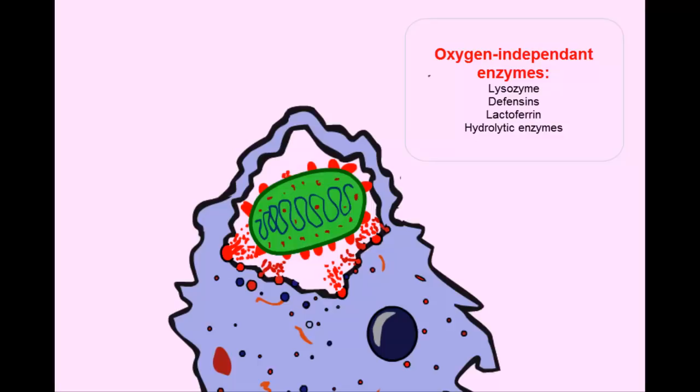Then you also have your defensins which form pores through bacterial cell membranes. And then stuff like lactoferrin which chelates the iron in the bacteria and then some other various hydrolytic enzymes. But the main thing to remember here with these enzymes is that their method of killing are carried out without oxygen. And these are grouped collectively as your oxygen independent killing mechanisms which are your lysozyme, your lactoferrin, your defensins and your hydrolytic enzymes.